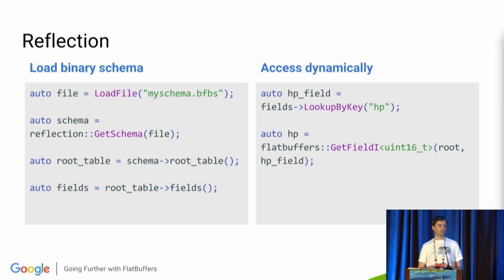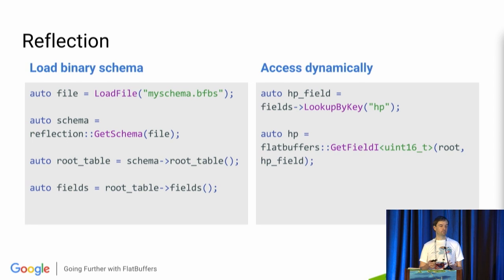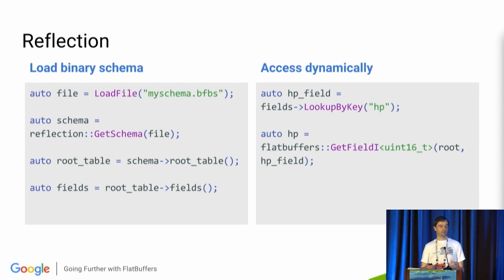Next: reflection allows you to work with serialized data in ways that go beyond the simple read/write API. For one, it allows you to load a schema at runtime and inspect it programmatically. It also allows in-place mutation of more complex data structures like strings and tables. As you can maybe see from the sample code, the binary schema is implemented using FlatBuffers itself, using the same generated code API to access the schema, which is all very meta.